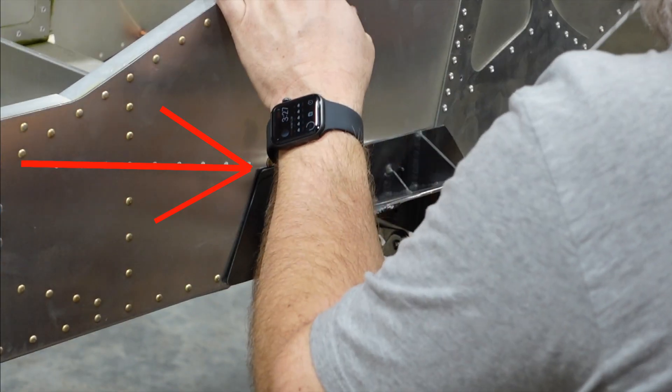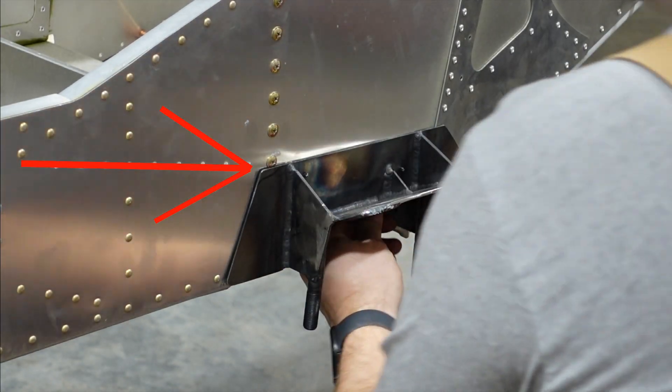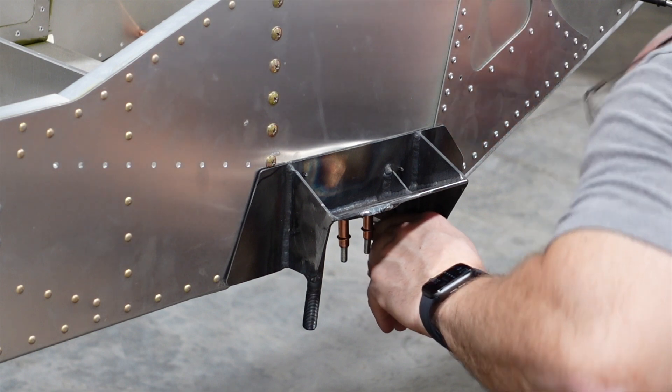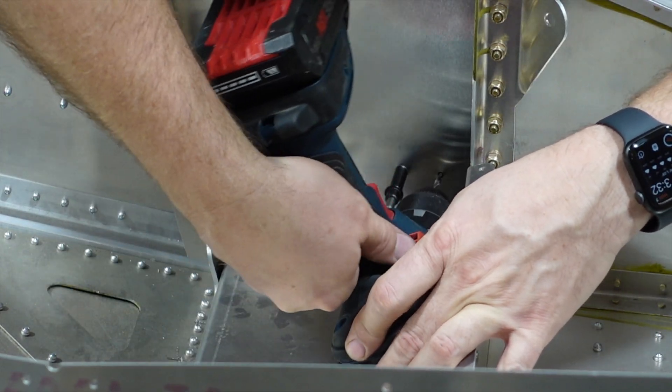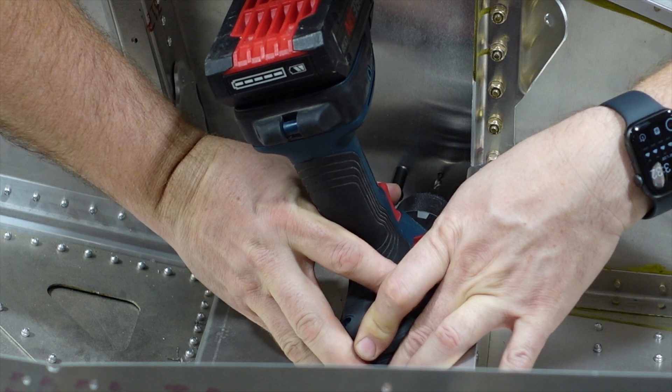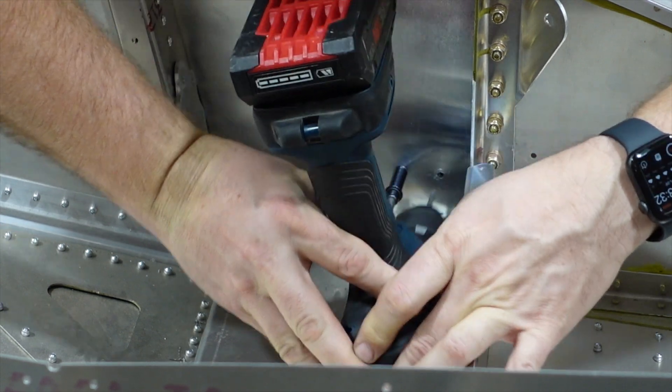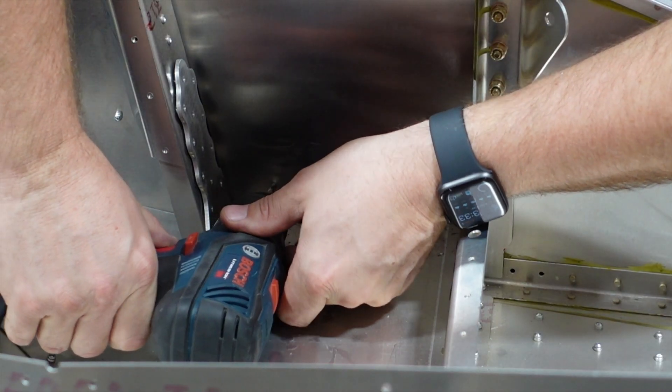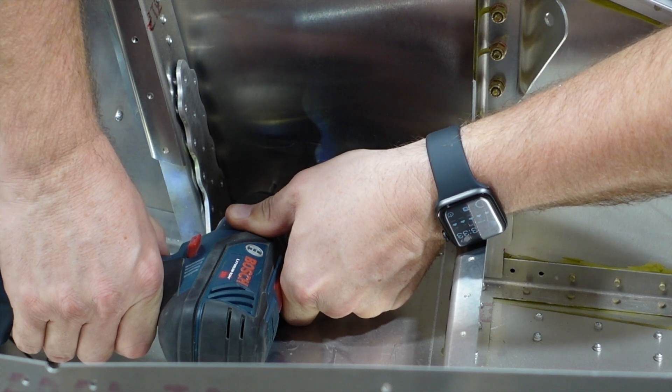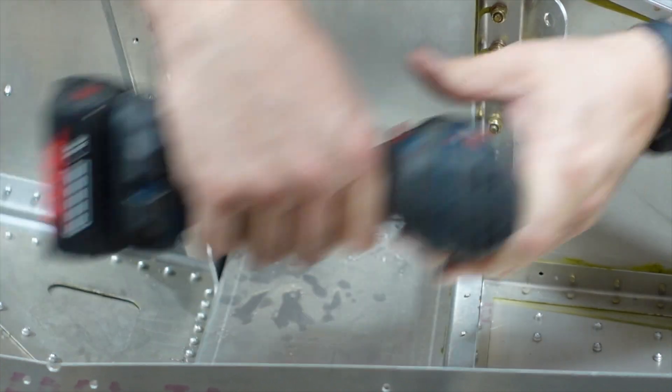Alright, here's that screw that I was talking about getting covered up. So basically what I'm doing here is with the holes that were already provided in the mount, I'm back drilling from the side holes that were in the fuselage already, the skins.